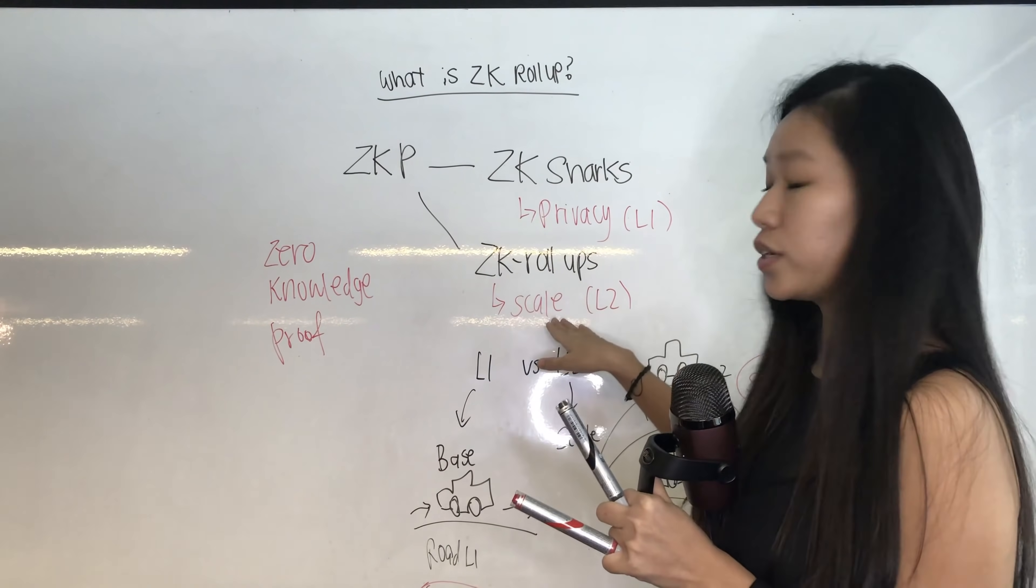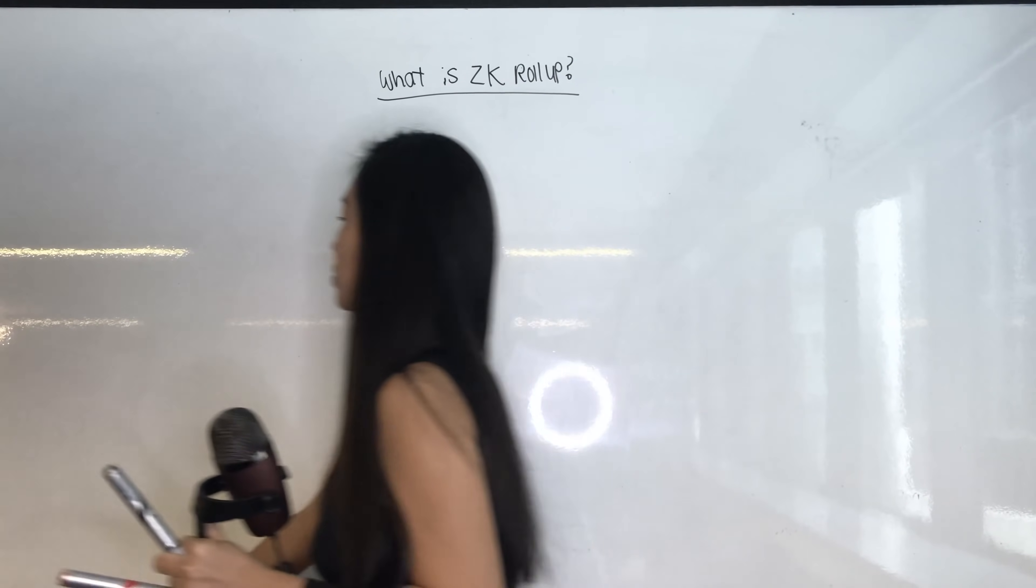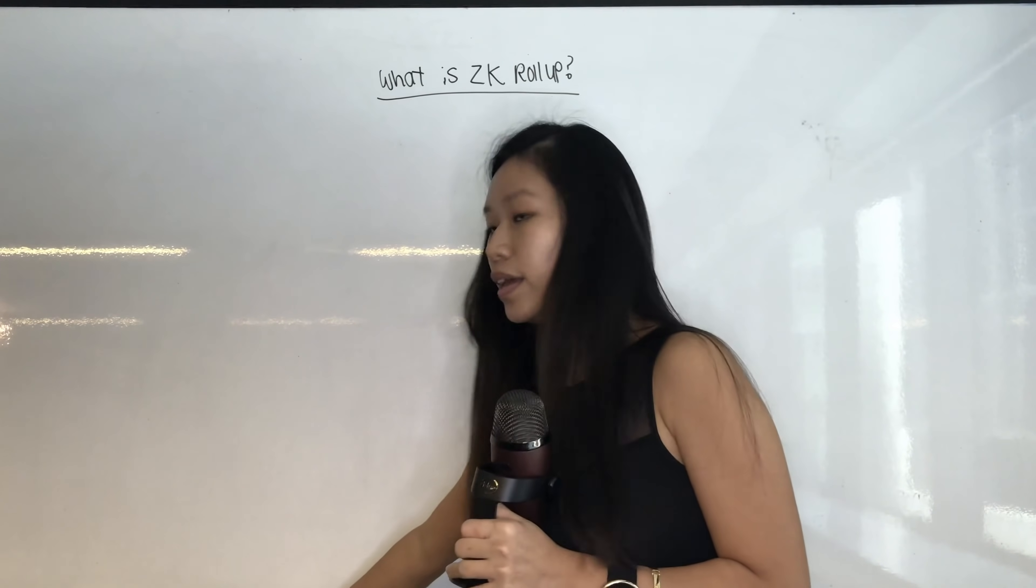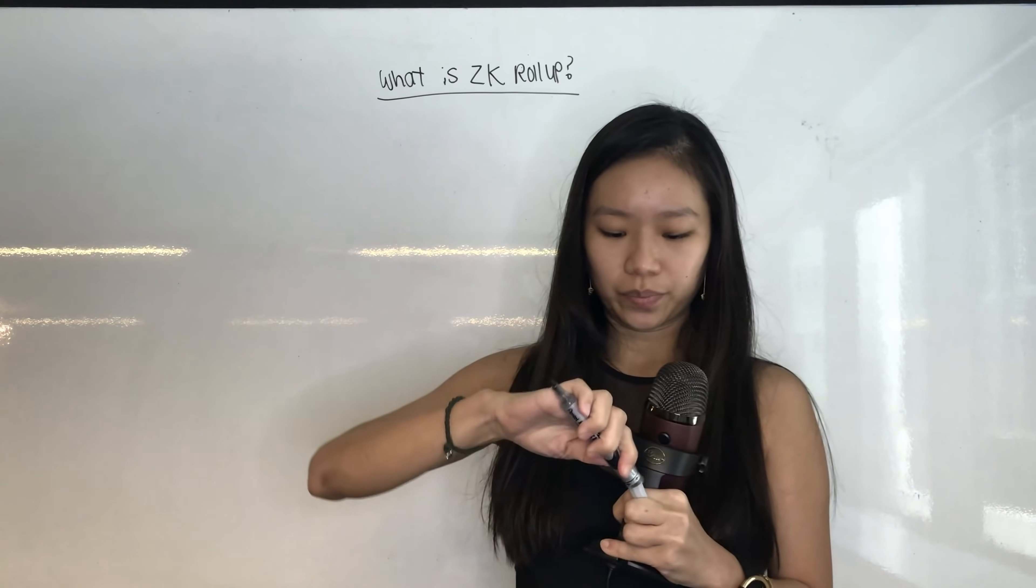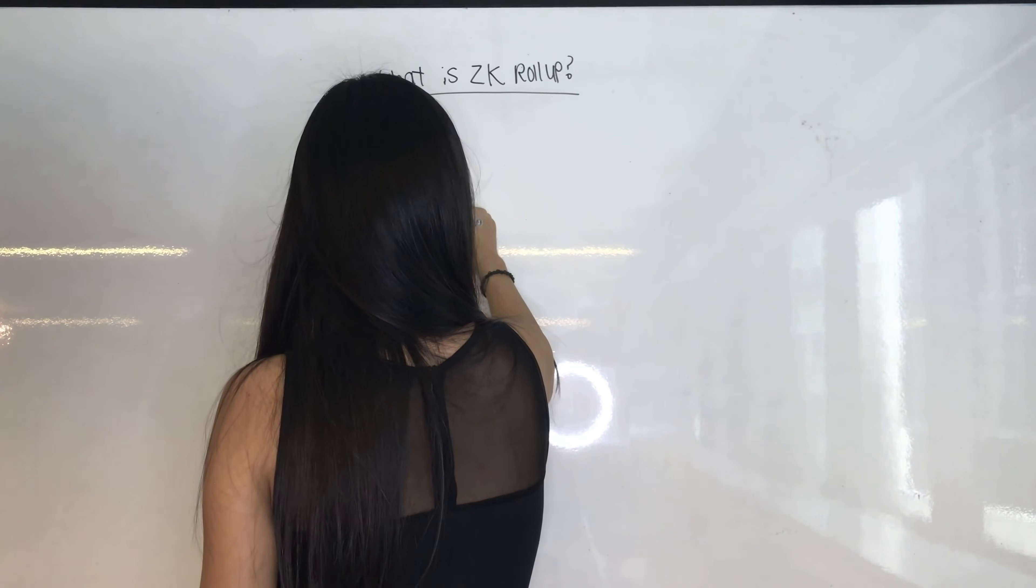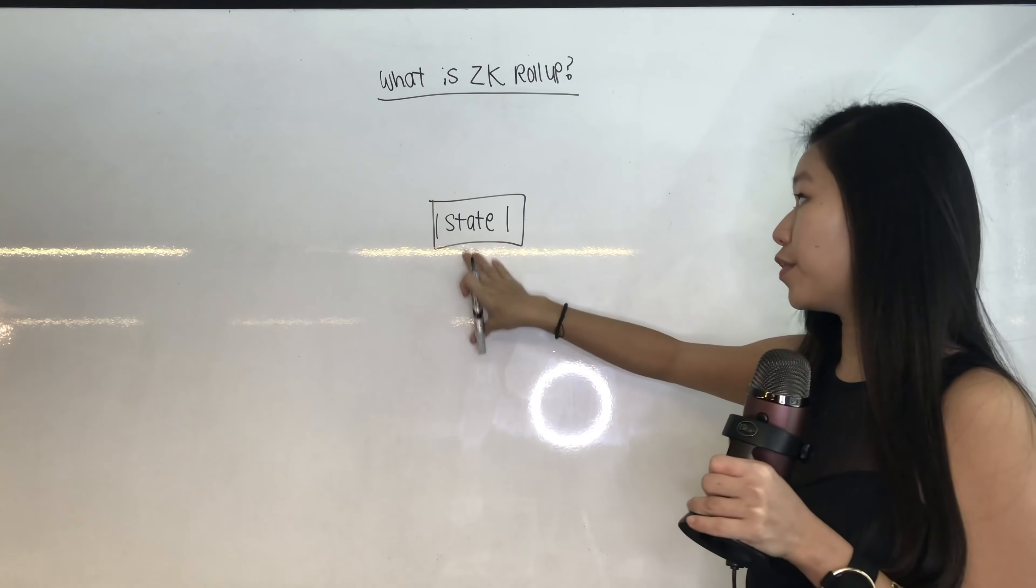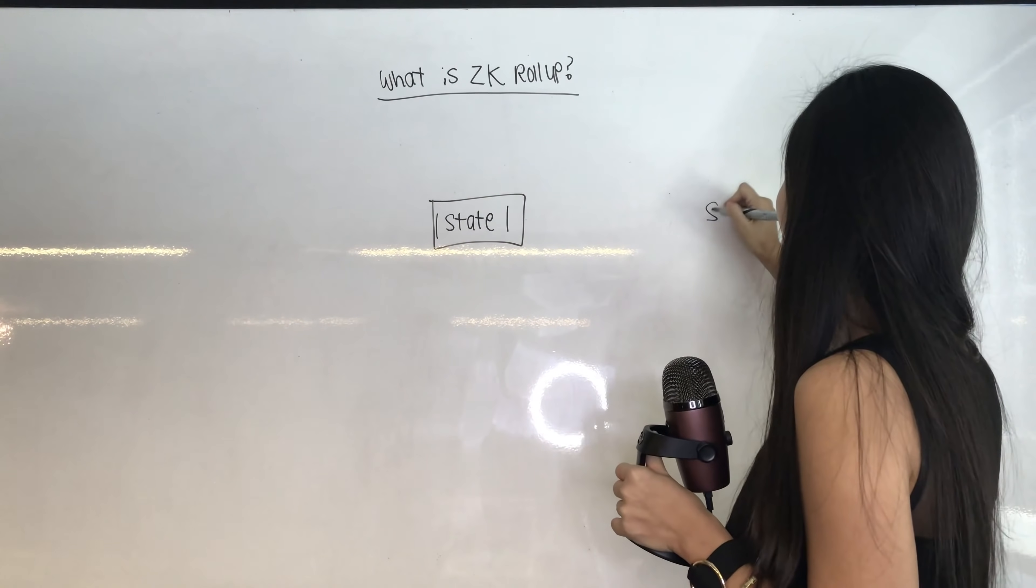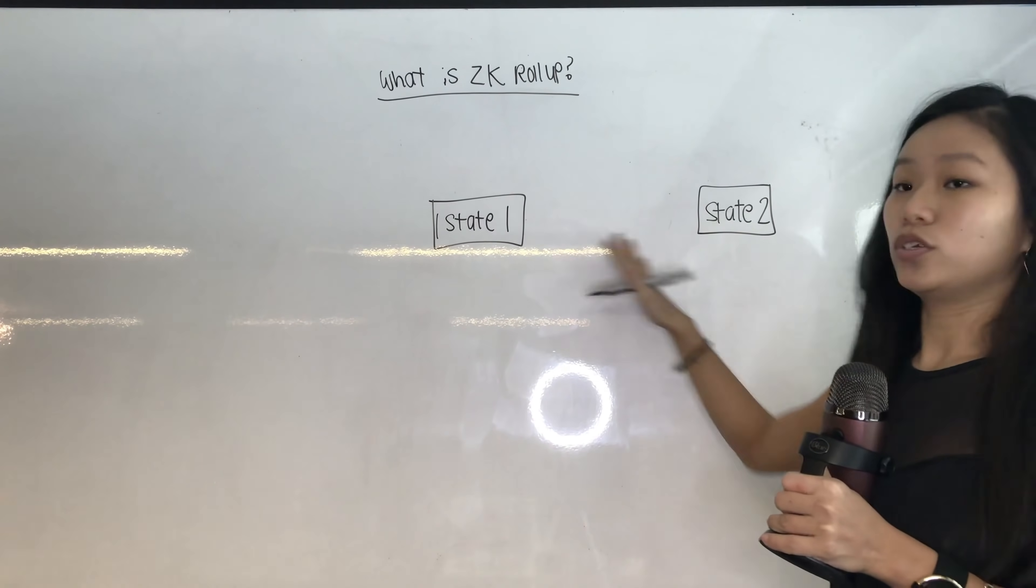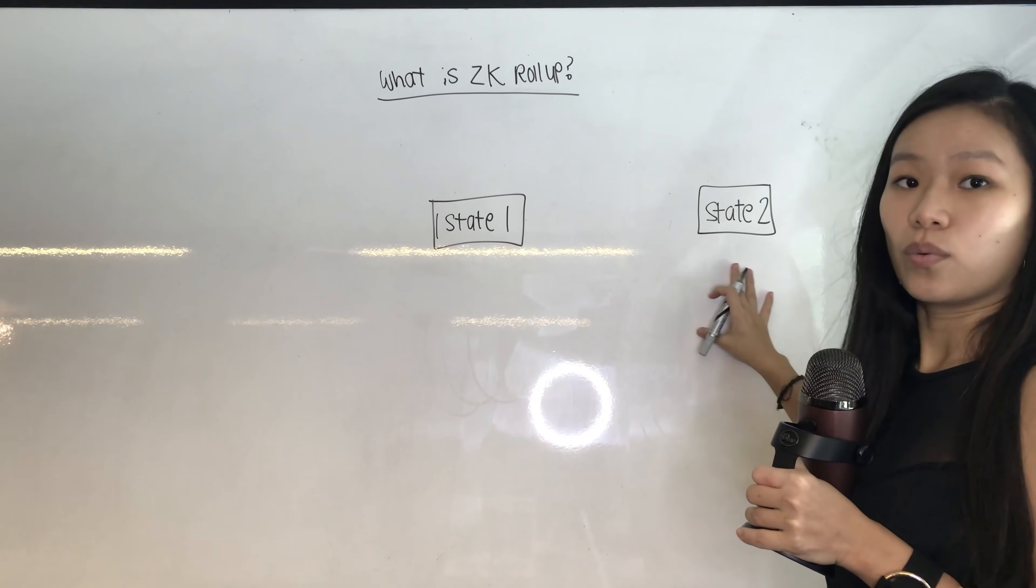Now I want to dive a little bit deeper into understanding what ZK Rollups are. To give you an analogy and a very easy way to understand what ZK Rollups are, let's go back to the example of roads and cars. We have these two different states in transactions. We're going to look at base layer. We have state one, in which transactions are approved, transactions are verified and validated. Then we have state two, where we have new transactions being validated, being verified, and it will go into state two. State one is existing transactions, and then state two is the second state where new transactions are being approved.